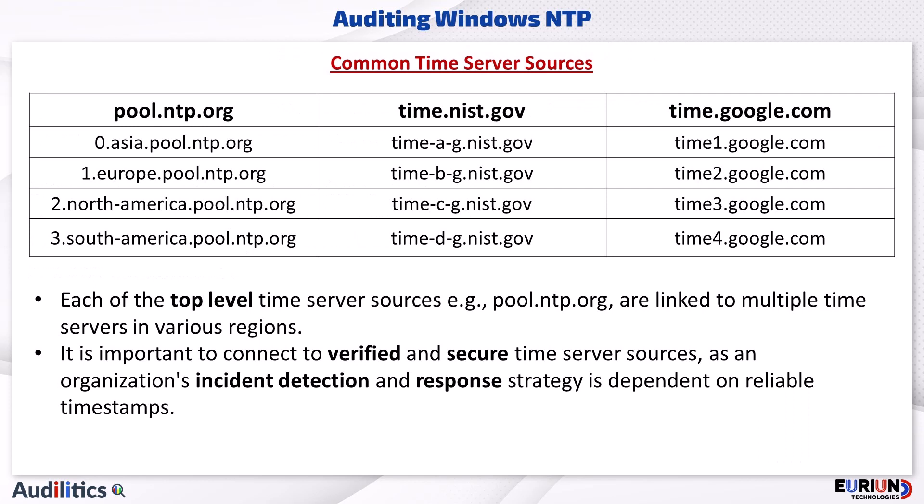Some of the widely used time server sources are pool.ntp.org, time.nist.gov, and time.google.com. Each of these sources are linked to multiple time servers in various regions. It is important to connect to verified and secure time server sources, as an organization's incident detection and response strategy is dependent on reliable timestamps.